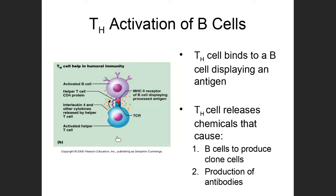Looking at this diagram, we have a B cell — shown in purple on top — that has bound to its one specific antigen. Here is the MHC2 receptor, with the antigen bound to it represented in red. Below that we have a helper T cell. The B cell is acting as an antigen-presenting cell, showing what it believes to be harmful to the helper T. The helper T releases chemicals — shown as yellow circles — back onto the B cell to activate it. Once activated, the B cell is capable of dividing into clones, then into plasma cells, and then producing antibodies.